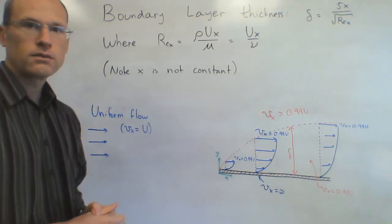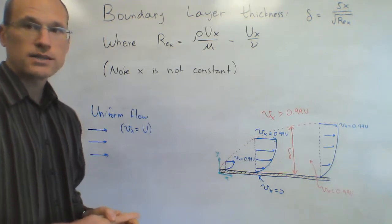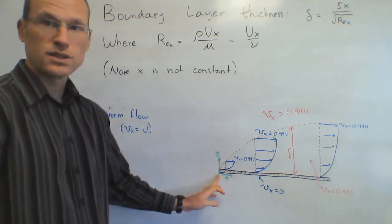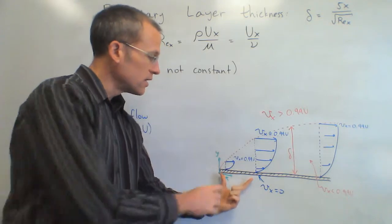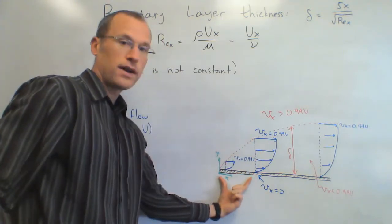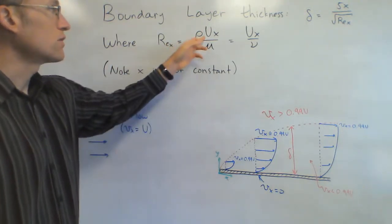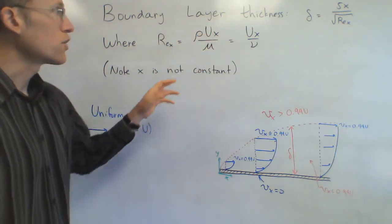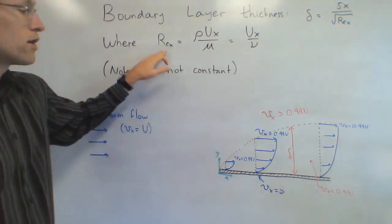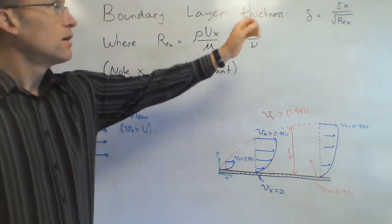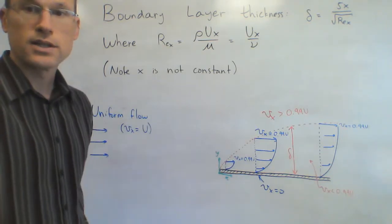The boundary layer thickness delta was found to be 5 times x divided by the square root of the Reynolds number at location x. From the front edge of the plate — x equals zero — wherever I want the boundary layer thickness, I go to that value of x. The Reynolds number is based on that value of x: density times freestream velocity times x over viscosity, or equivalently velocity times x over kinematic viscosity. Then 5x divided by the square root of that Reynolds number gives the boundary layer thickness at that location.